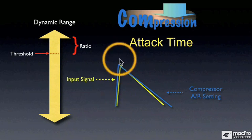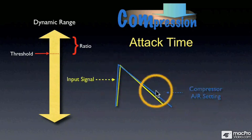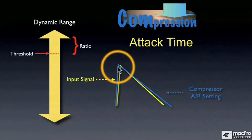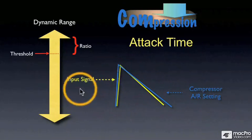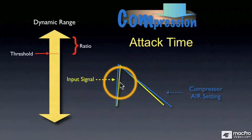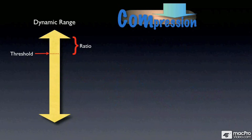As you can see here, now all of our yellow signal transients that happen to pass above the threshold will be compressed, because our compressor's attack setting is fast. We've slammed the door fast so that none of those dBs will get through unaffected.